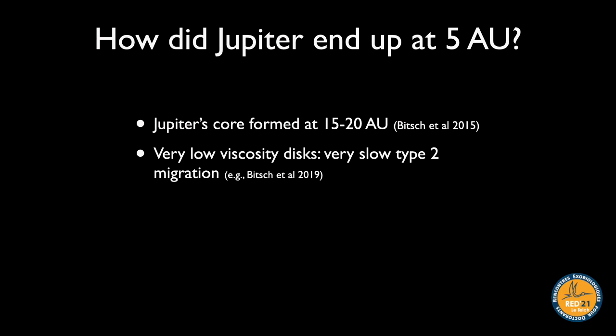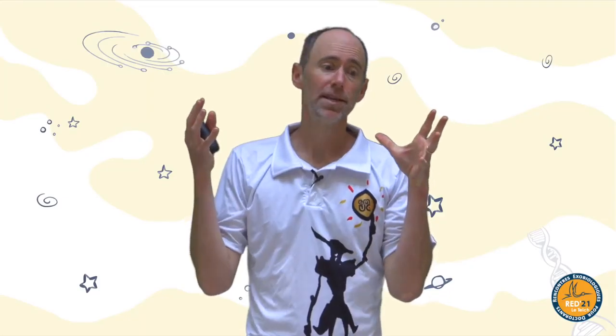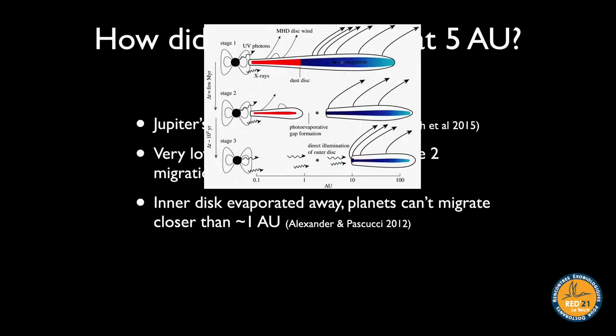One possibility is that Jupiter's core started at 15–20 AU, grew slowly, and migrated in to be stranded at about 5 AU. That's not very satisfying because it requires very little solid material interior to 20 AU. Maybe migration is much slower than we thought — especially for giant planets, since once a gap is carved in the disk, the migration rate depends on how fast the disk evolves, and a low-viscosity disk evolves very slowly.